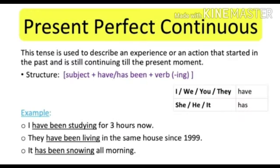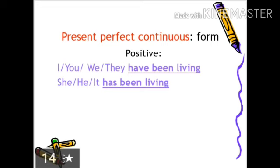Further, we will talk about present perfect continuous tense. This tense is used to describe an experience or an action that started in the past and is still continuing to the present moment. Structure: subject plus have/has been plus verb with -ing. For example: I have been studying for three hours now; they have been living in the same house since 1999; it has been snowing this morning.